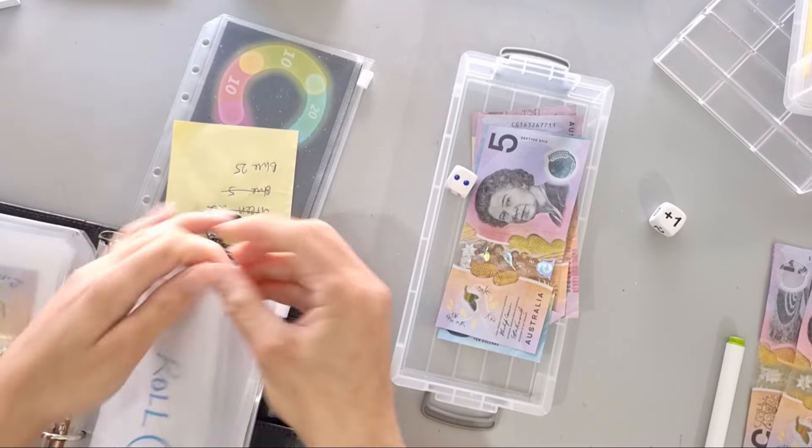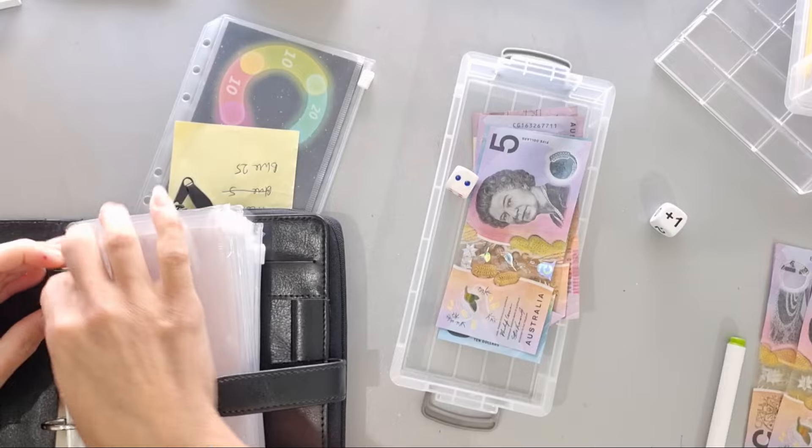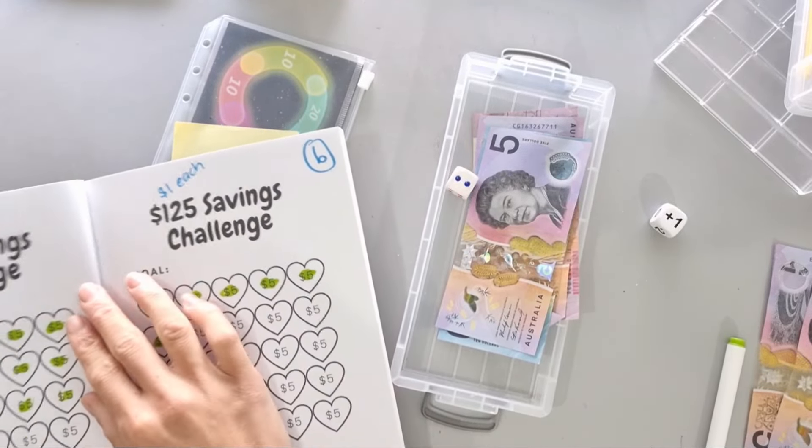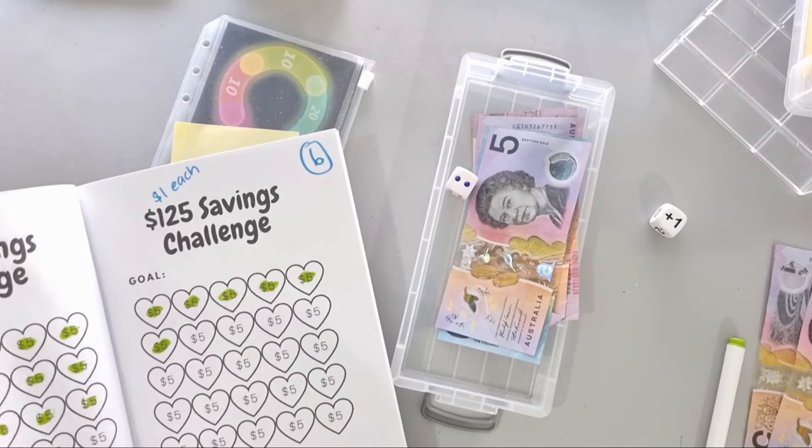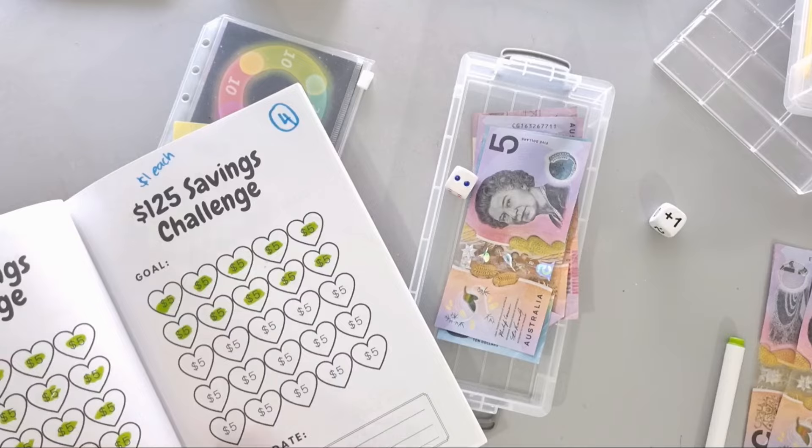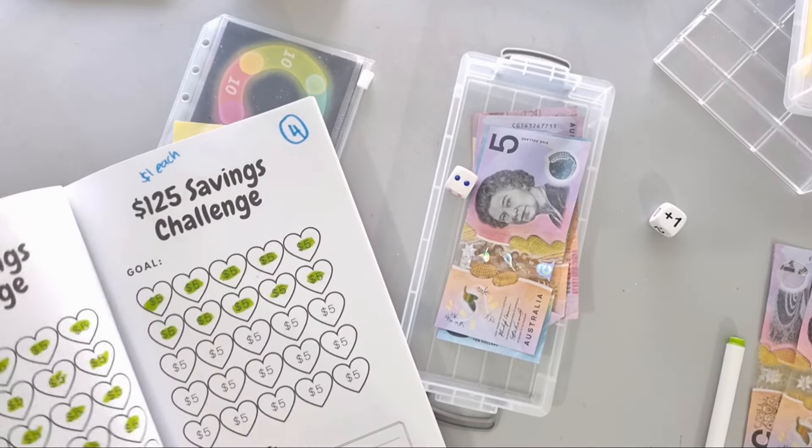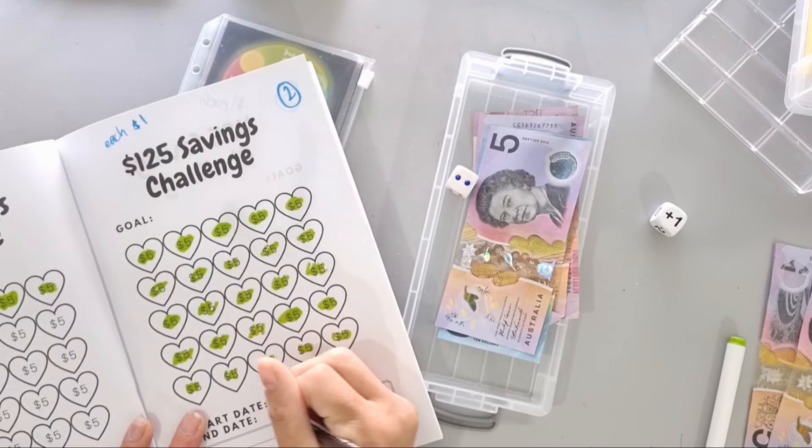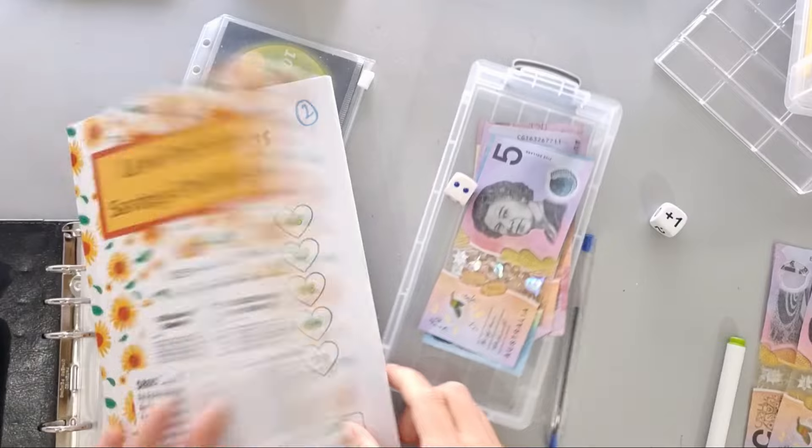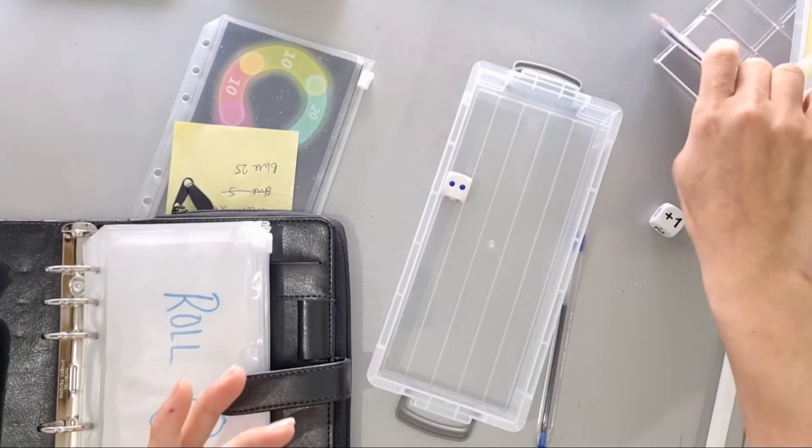Put that five in there. And let's write down that we completed it week three of August. Yay! So we've got $25 there now to reallocate so I'll put that to the side for a minute.